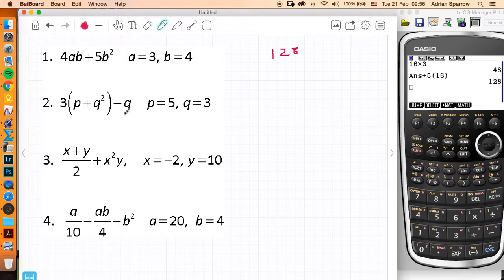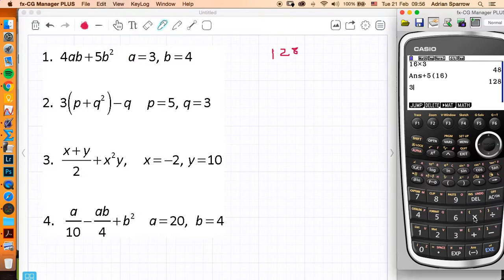I want to do the bracket first here, so I'm going to do 5 add 3 squared, 3 squared is 9, so it's 5 add 9 is 14, so here I've got 3 times 14 first, and then I want to take away the Q value, which is another 3, which is going to give me 39.